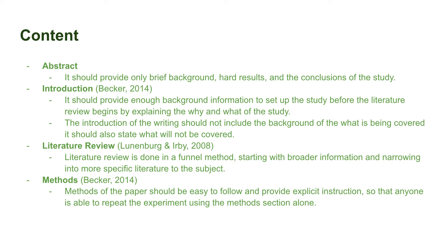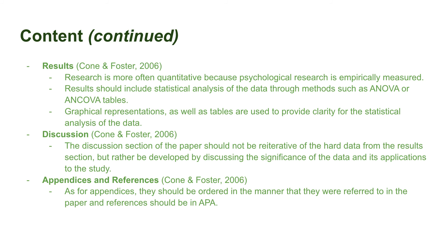A literature review is typically done through the funnel method, meaning the researcher goes from broader to more research-question-specific literature in order to ease into the specificity of the question. As for the method section, it should include easy-to-follow instructions such that anyone could reproduce the experiment. This section should not only include explicit instruction of the procedure but also how the data analysis was completed. The method section's clarity is vital because the ability to replicate the experiment aids in the credibility of the study. In the results section, researchers commonly use a quantitative approach to data collection, as much of psychology research is empirically based. Researchers can perform a statistical analysis using items such as ANOVA or ANCOVA tables.